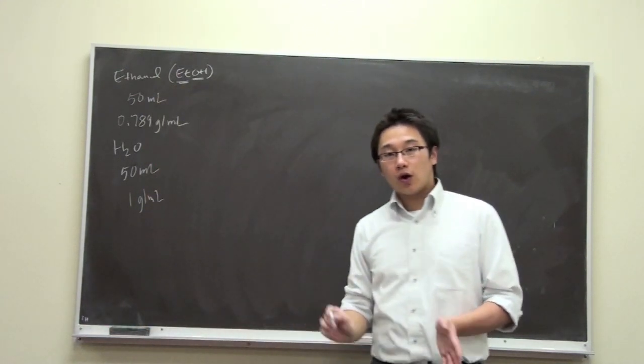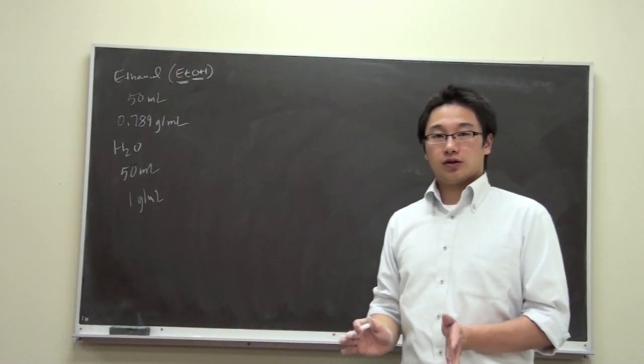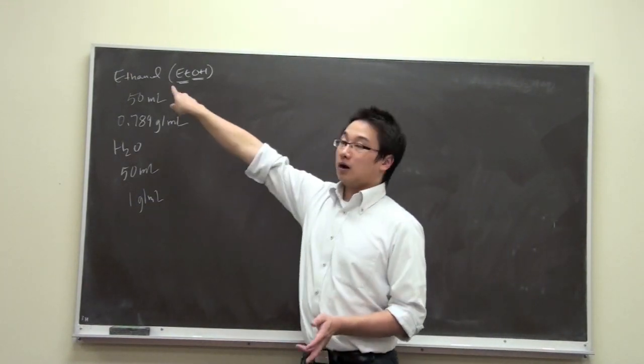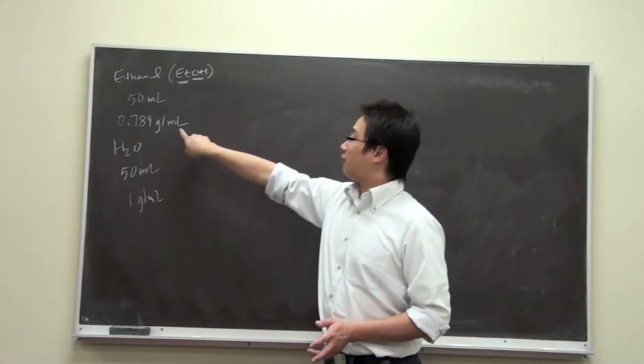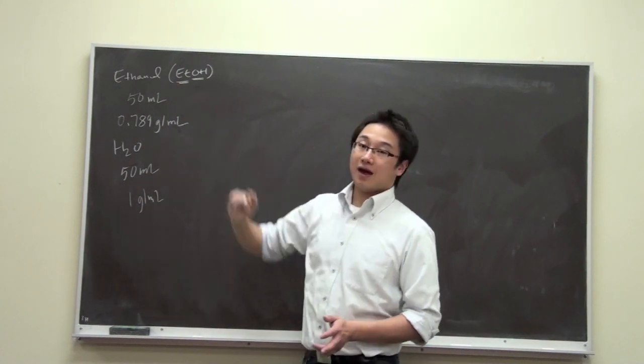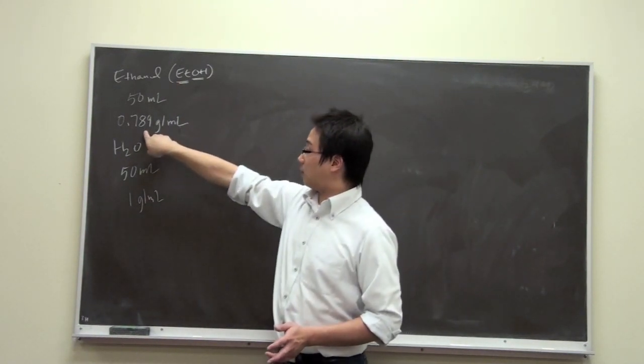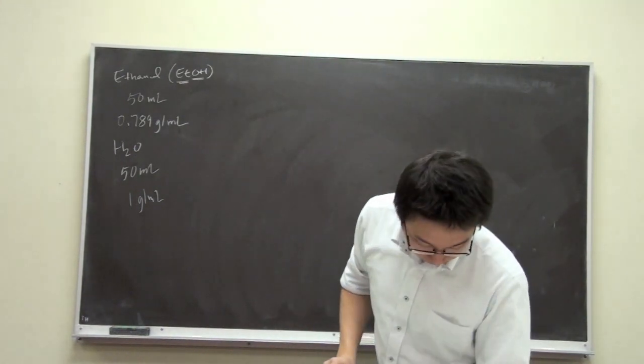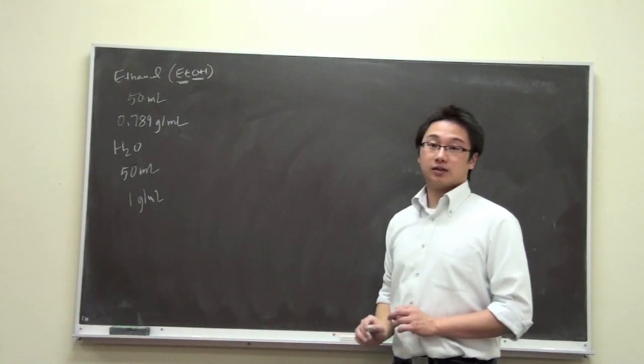Just to make sure that you understand the density, the meaning of density, it means that for every single milliliter of the ethanol, it will have a mass of 0.789 grams.